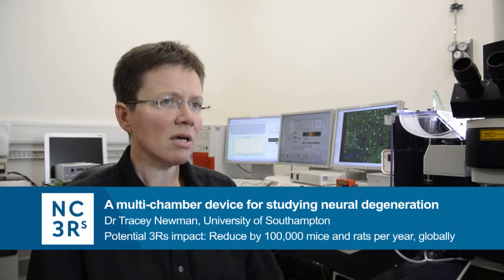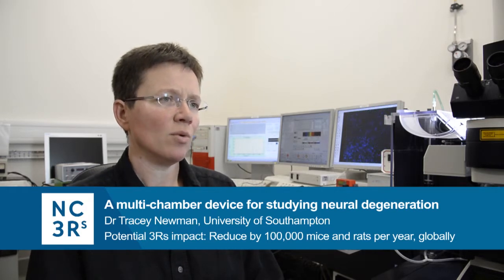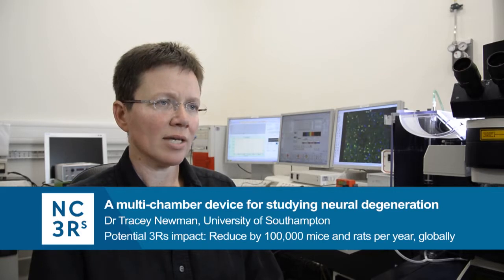I think lots of people will be aware of some of the diseases that affect the central nervous system. If we think about conditions like Alzheimer's disease, Parkinson's disease, lots of people will be very familiar with those terms. But what's actually going on in someone's central nervous system when that's happening?